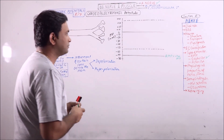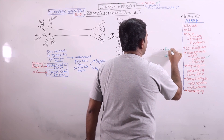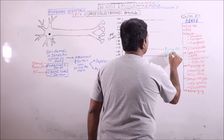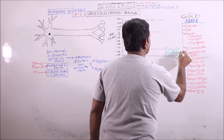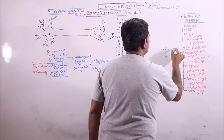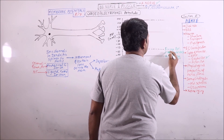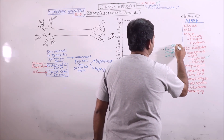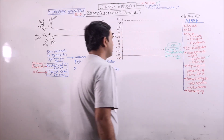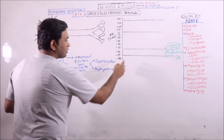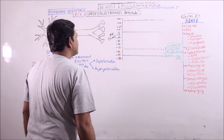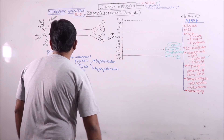There is another term: firing potential or threshold potential. Firing potential or threshold potential is minus 55 millivolts. So if the membrane potential rises to minus 55 then action potential will be initiated, otherwise it will not initiate.